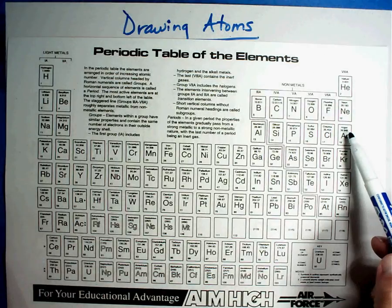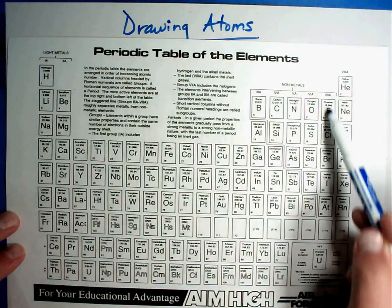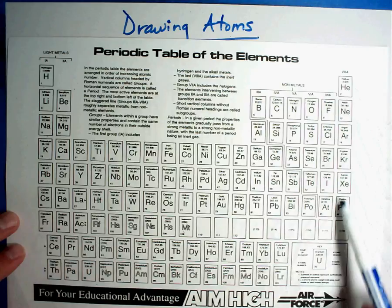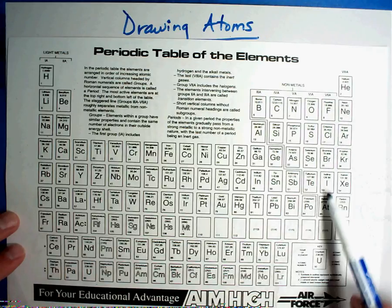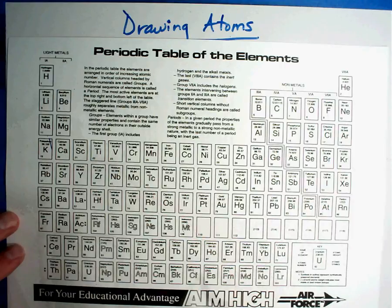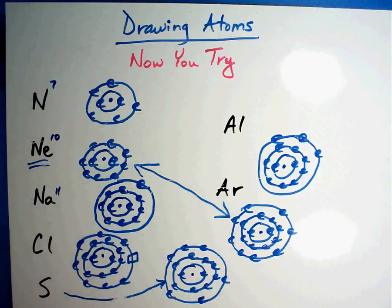What we're going to find is that's how they made families or groups, the columns, where these are called the noble gases. They all act very similar. They all act very similar. The same is true over here as well. They all act very similar to each other. So this is how you draw atoms. If you got them right, you've got it. You're ready to move on to the next section. If not, you may want to go back and try them again. That's how you draw atoms.